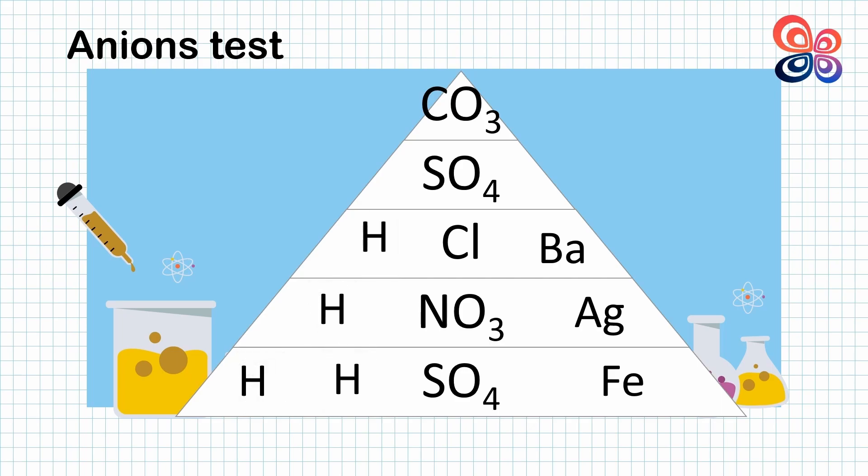How to determine the test of anions for carbonate, sulfate, chloride and nitrate? In this case, start from the top of the pyramid, which is carbonate.